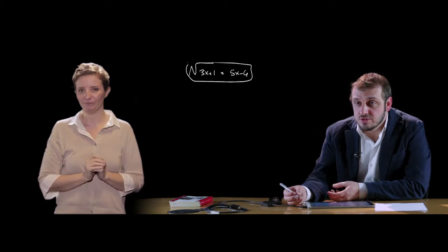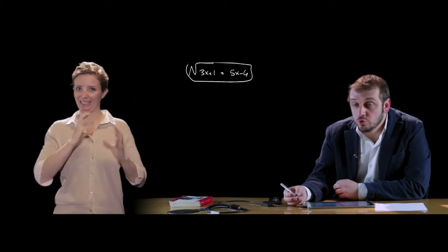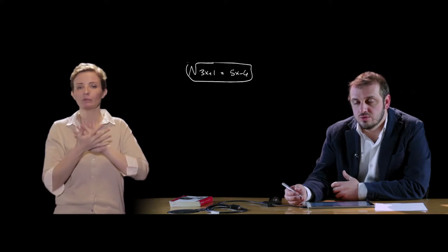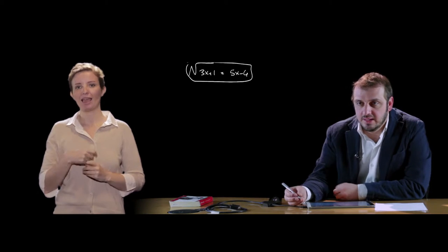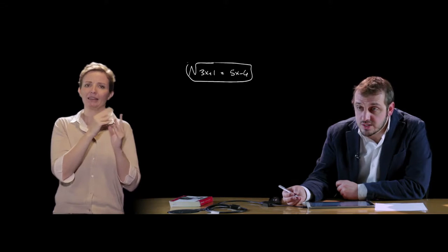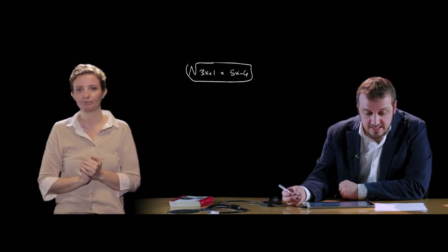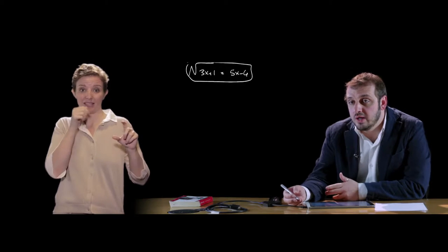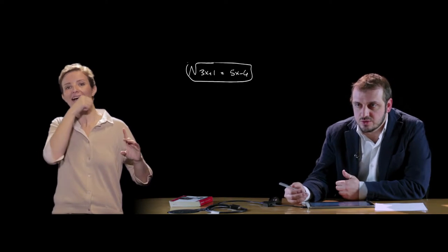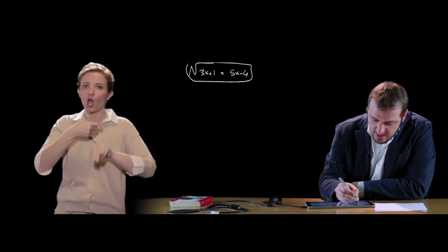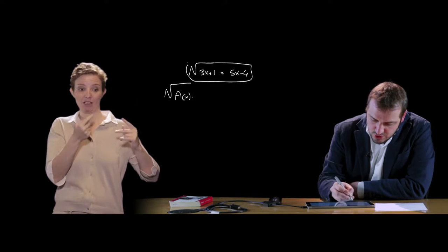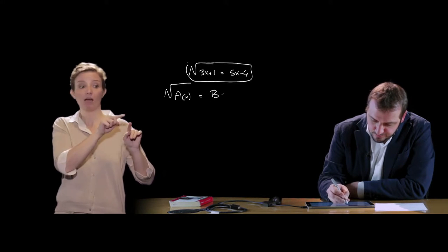Seguendo poi le condizioni di esistenza, quello che dobbiamo cercare di fare è ricondurre il problema alla soluzione di un'equazione razionale, ossia dobbiamo far sparire le radici, siano esse di indice pari o indice dispari. Per far questo dobbiamo isolare il radicale. Se nell'equazione ne esistono più di 1, è necessario andare a reiterare lo stesso procedimento più volte. Isolare il radicale vuol dire ricondurre la nostra equazione a un'equazione del tipo radice di a(x) uguale b(x).